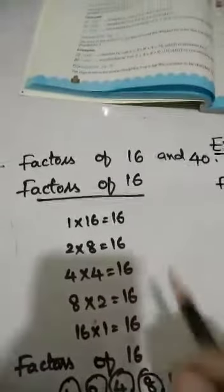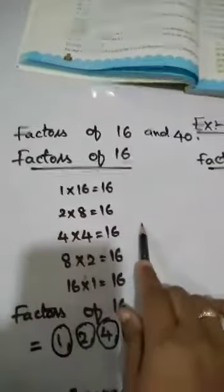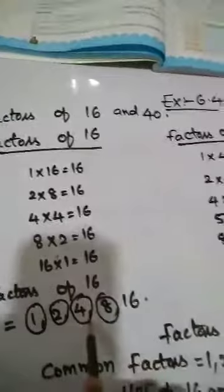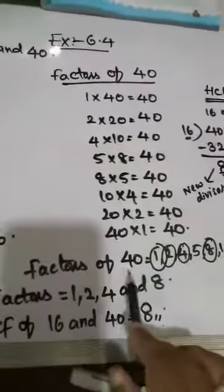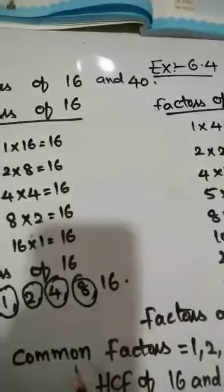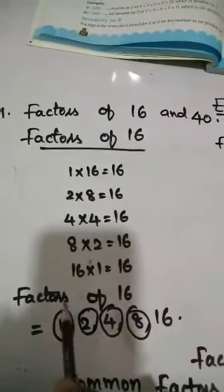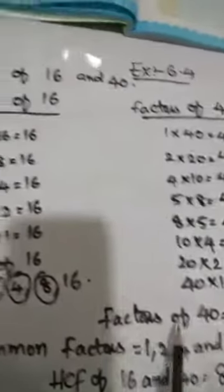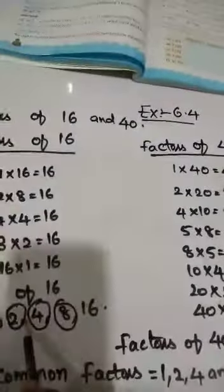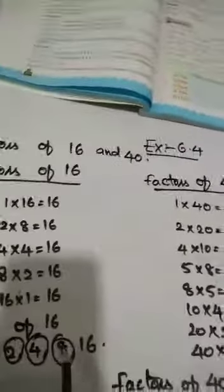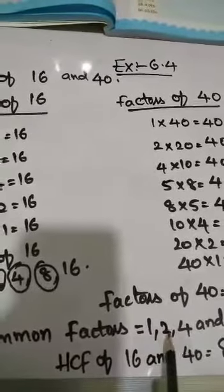Once again, I am explaining this. Firstly, find the factors of 16 and 40. Factors of 16: 1, 2, 4, 8, 16. Factors of 40: 1, 2, 4, 5, 8, 10, 20, 40. Common factor means you check both lists for common numbers: 1, 2, 4, and 8 are common. So common factors equal 1, 2, 4, and 8.